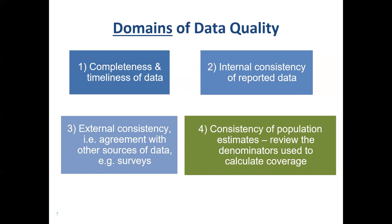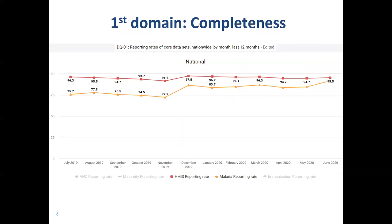I'm going to review each of these four domains in turn. You see here a chart showing the trend over the last 12 months in the reporting completeness for two different datasets. It's possible with a single chart like this to show the trend for multiple datasets. Completeness — reporting rates — is the most fundamental aspect of data quality. Before you attempt to interpret any trend in the data themselves, you have to look at what is the trend in the percentage of completeness of the data.